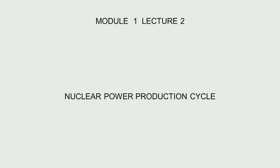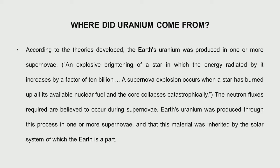Now, having had an idea about the different uses of radiation, let us go to the main topic: nuclear power production. To produce power, we use uranium-235, which is available in nature. It is the only element that can be fissioned, and that fission process produces heat, which is used to convert water into steam and run a turbine.